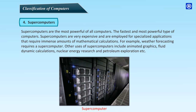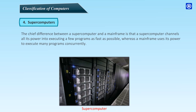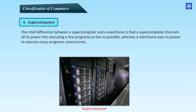Fourth, Supercomputers. Supercomputers are the most powerful of all computers — the fastest and most powerful type, very expensive and employed for specialized applications requiring immense amounts of mathematical calculations. For example, weather forecasting requires a supercomputer. Other uses include animated graphics, fluid flow dynamic calculations, nuclear energy research, and petroleum exploration. The chief difference between a supercomputer and a mainframe is that a supercomputer channels all its power into executing a few programs as fast as possible, whereas a mainframe uses its power to execute many programs concurrently.